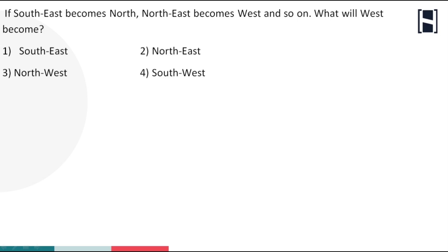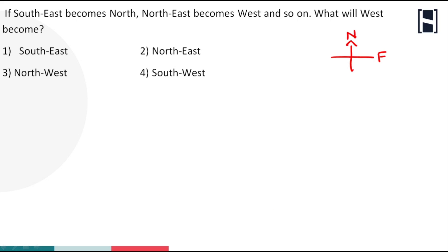Hi everyone, welcome to Instax. In this video we'll be discussing one of the important models in directions. The given problem here: if southeast becomes north, northeast becomes west, and so on, what will west become? In direction concept, always our face side is north side, right hand side is east side, north opposite is south side, east opposite is west side.